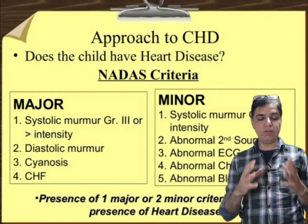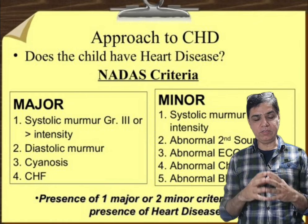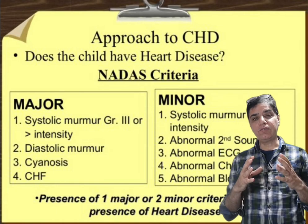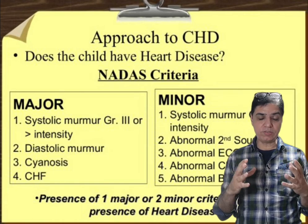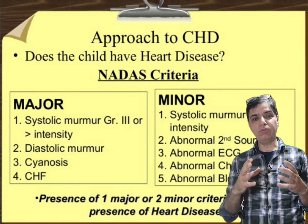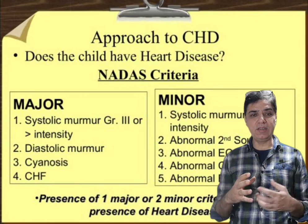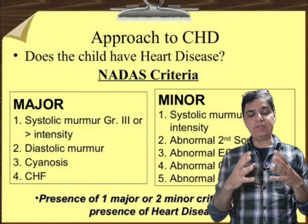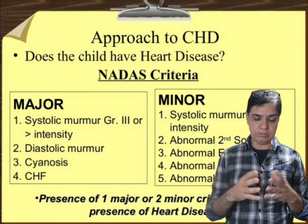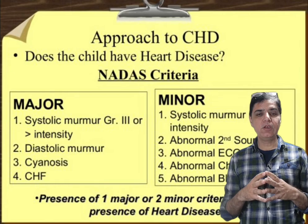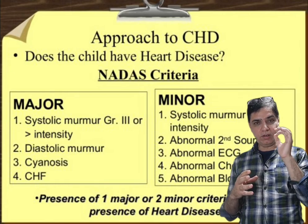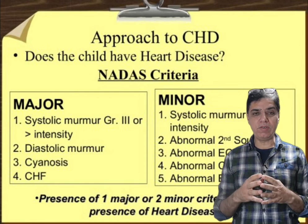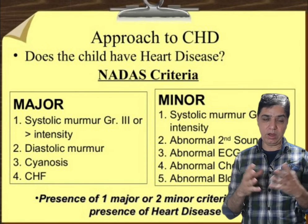The third major criterion is central cyanosis — any child who has central cyanosis fulfills the major criteria. The fourth is the presence of congestive heart failure, meaning a child who might have tachycardia, tachypnea, tender hepatomegaly, or peripheral edema. If any one of these four major criteria are present, it means the child has a possibility of having an underlying heart problem.